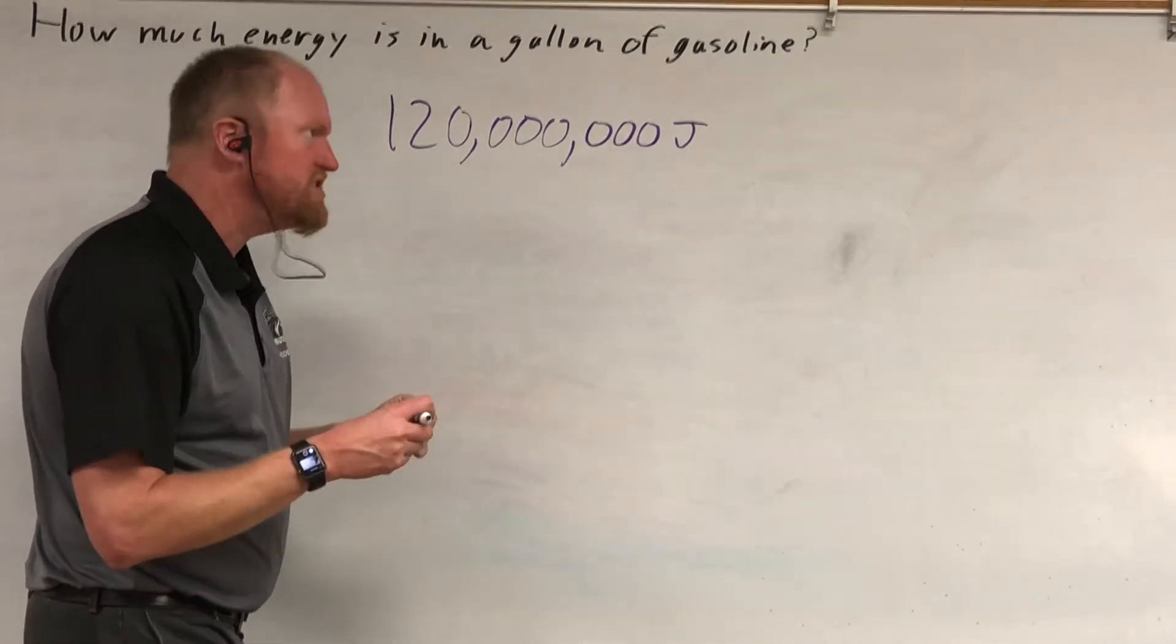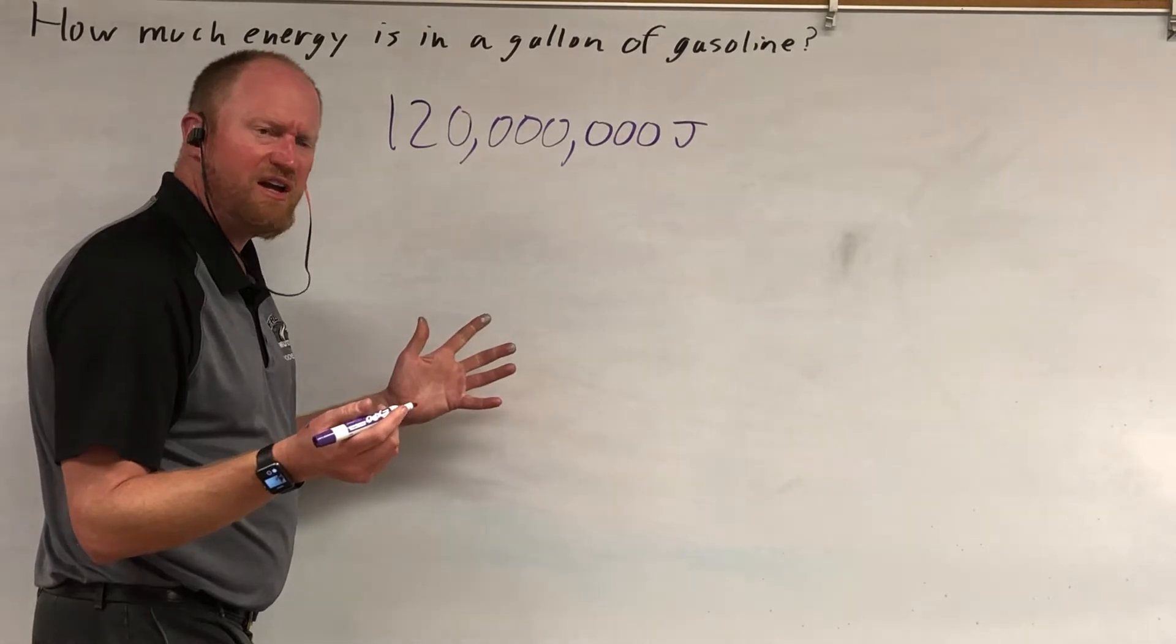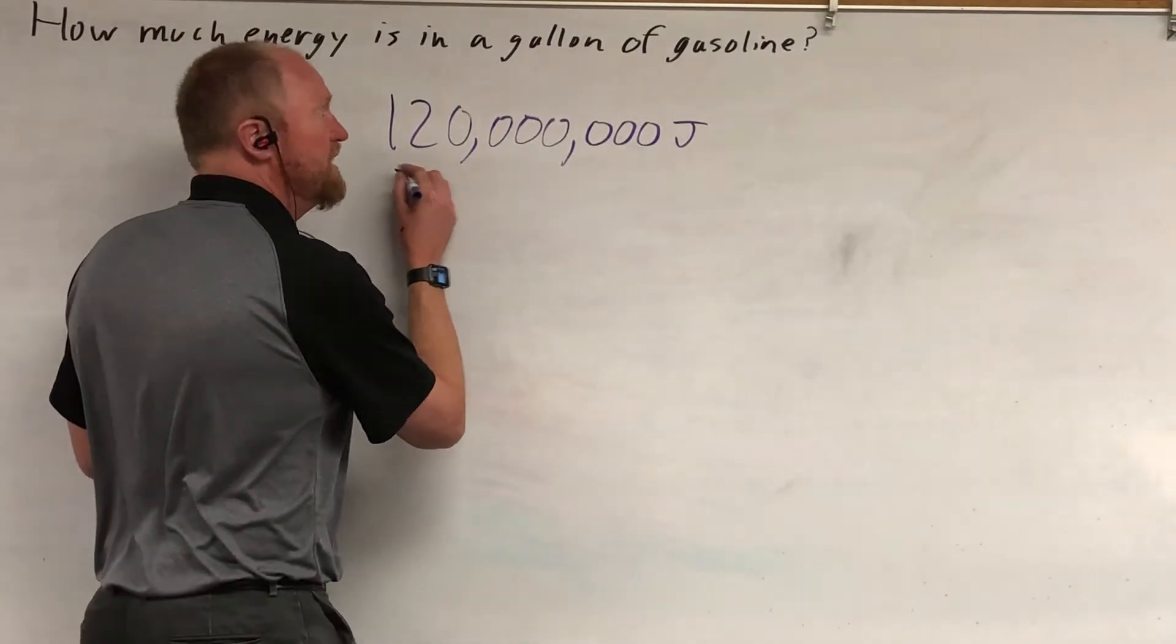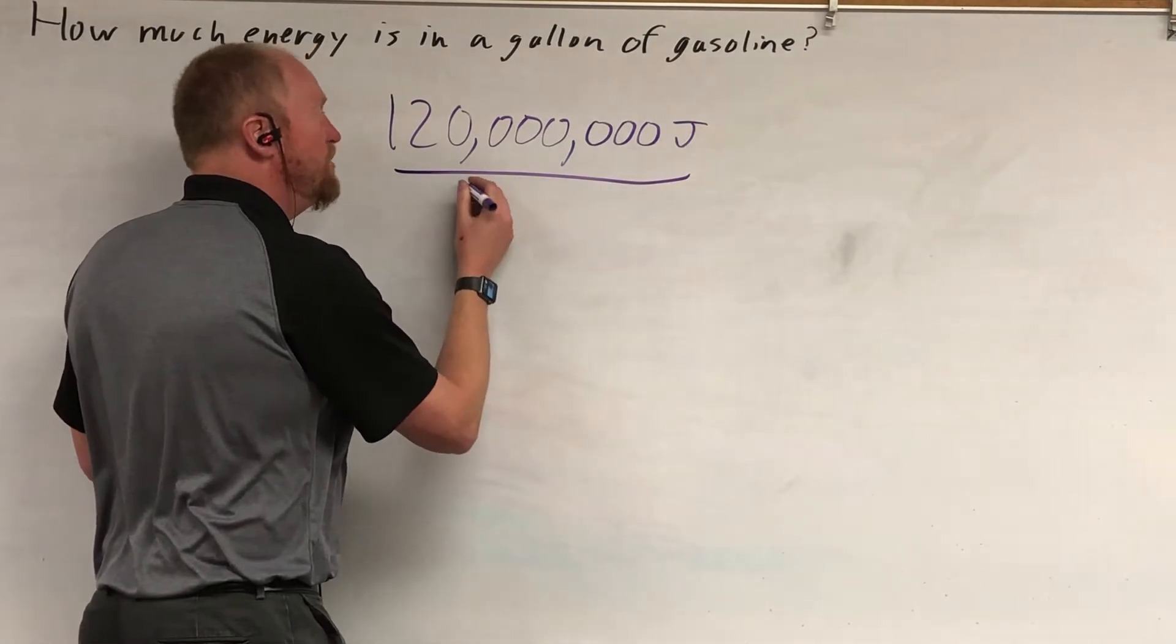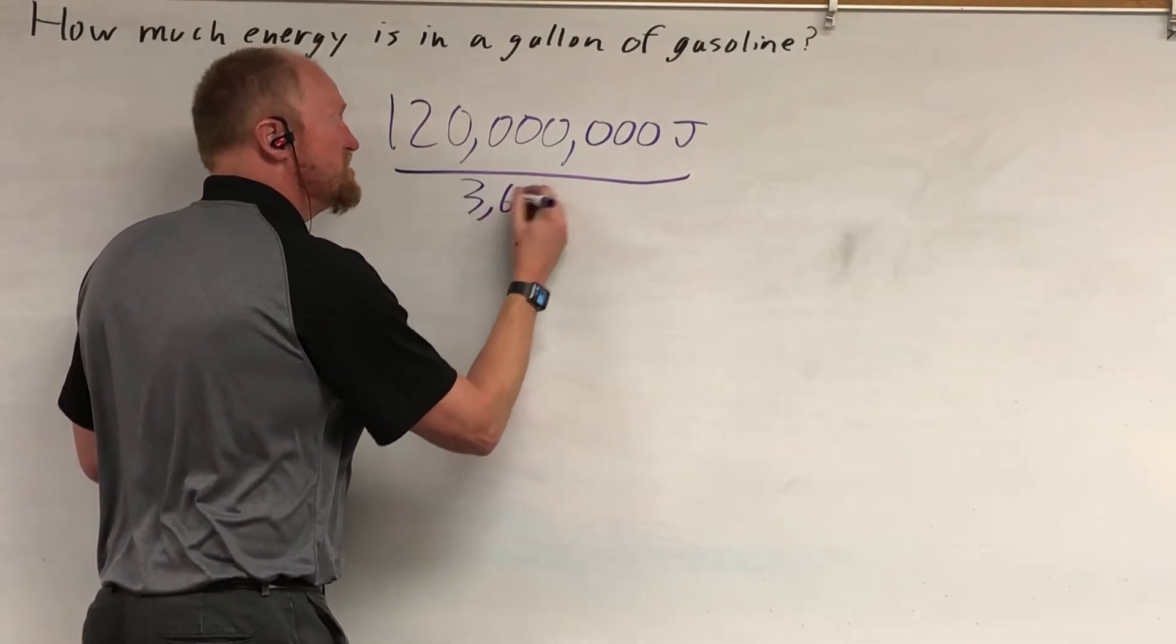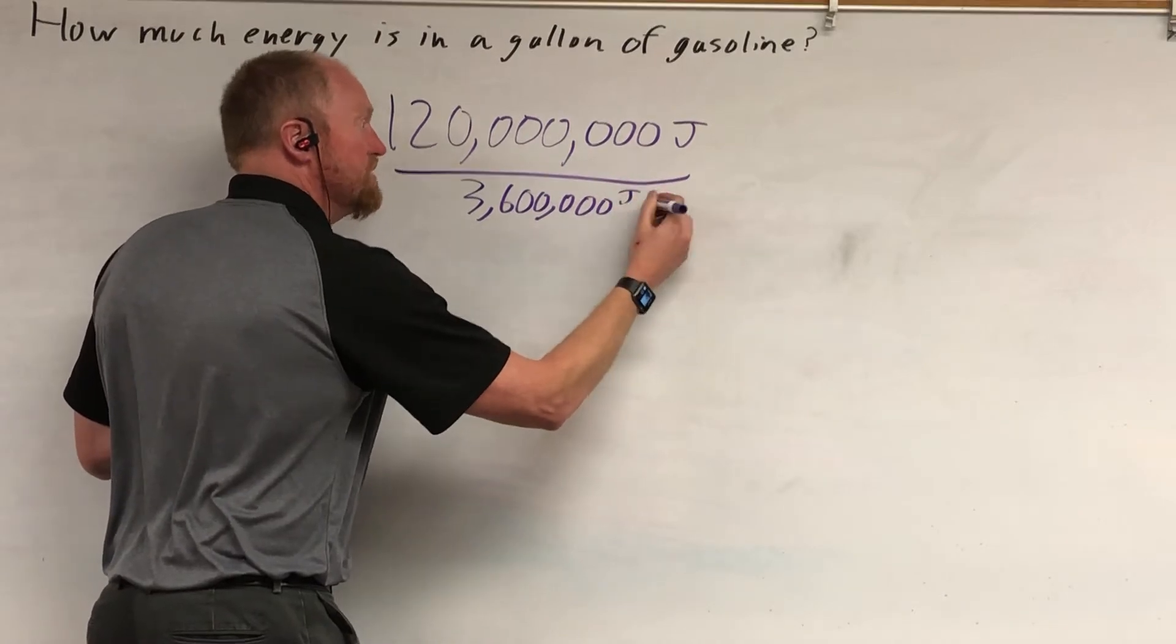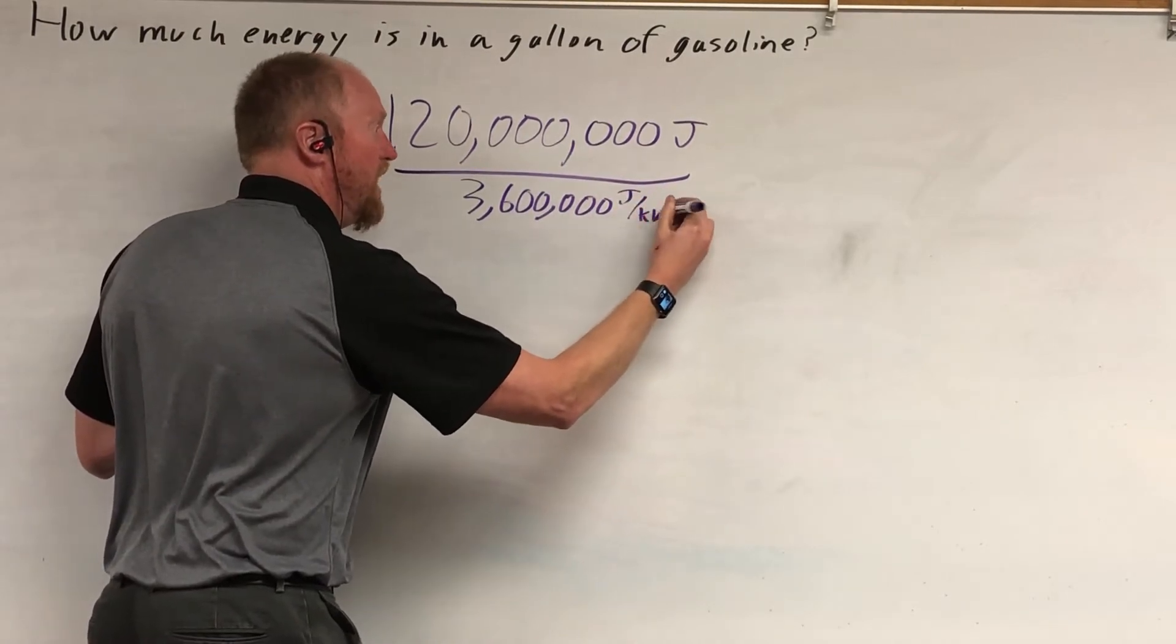So, imagine you want to try to figure out, well, what would that be like if you want to compare it to your energy using your home? Well, the energy in your home is being sold to you by the kilowatt hour, and there's 3,600,000 joules per kilowatt hour.